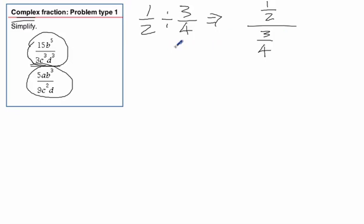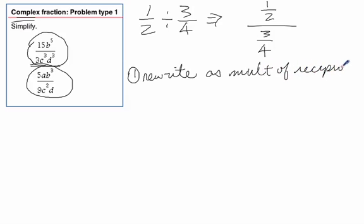Either way, regardless of how it's written, we know that we rewrite that first step, rewrite as a multiplication of reciprocal. So we'd rewrite that as one-half times four-thirds, right? So we're going to do this the same way. Step one: